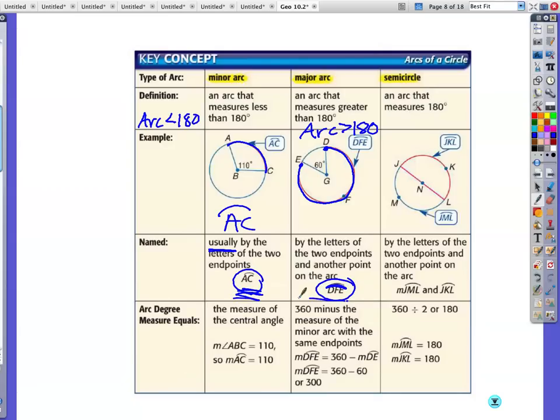An arc that measures 180 degrees is called a semicircle. Oh, yeah. So there's your diameter. There's the arc. All right? Notice how they have, how this is notated. You can have the letters of the two endpoints and another point of the arc. So they have J, M, L. So J through M to L. So that's talking about the dotted arc. And J, K, L is talking about this arc from year to year.